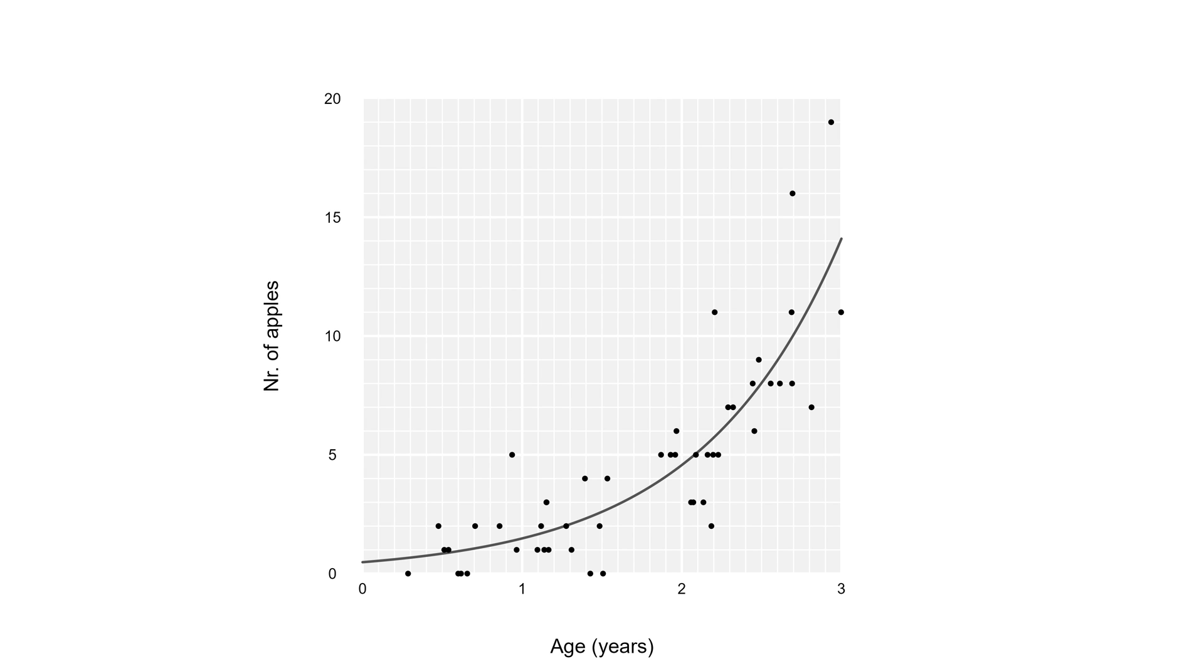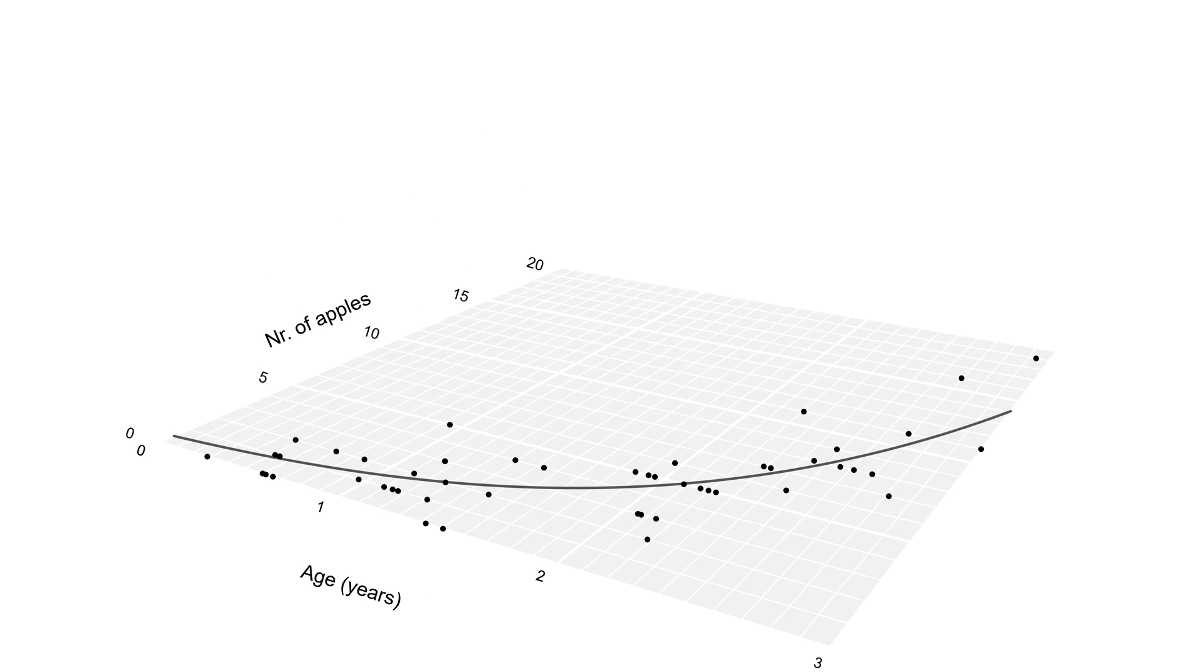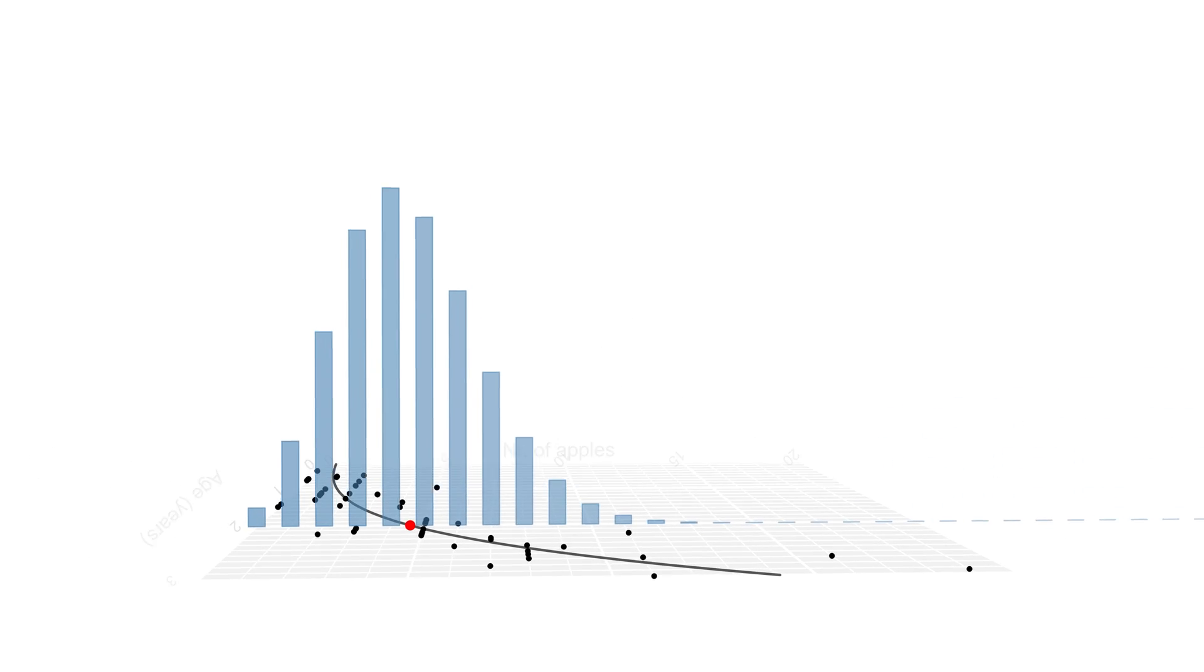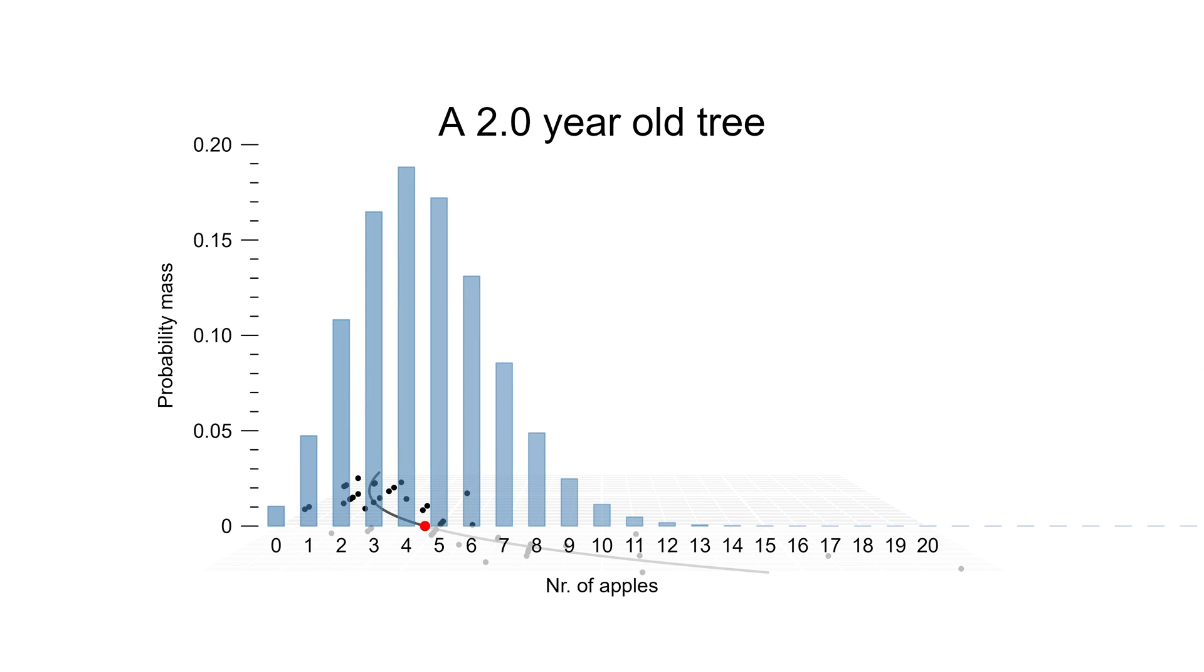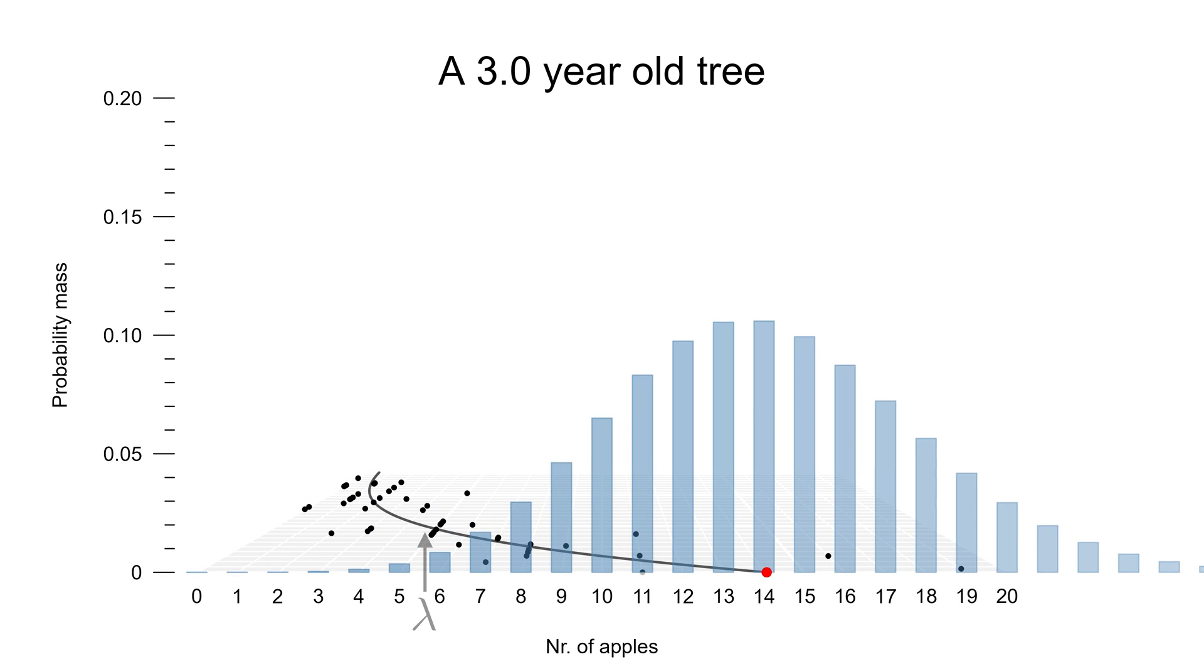In the example here we use the Poisson distribution, which means that if we flip this figure over, we can imagine a Poisson distribution running along the model. At any given value of age, we predict a Poisson distribution with a certain rate. Move to a different value of age and we predict a Poisson distribution with a different rate.